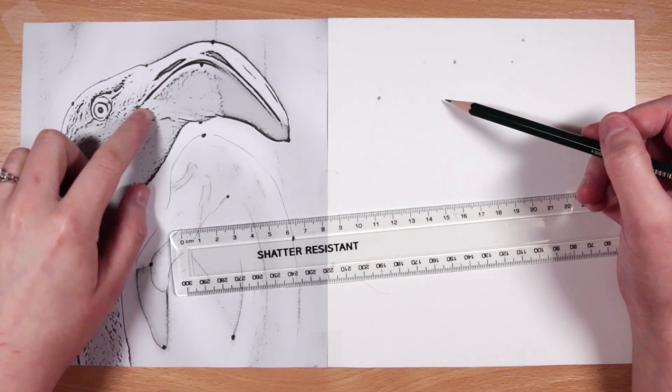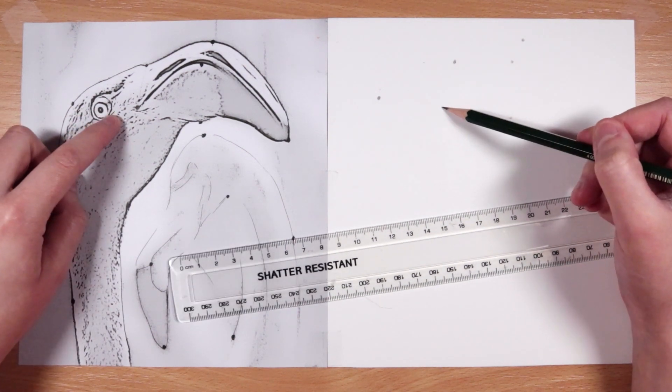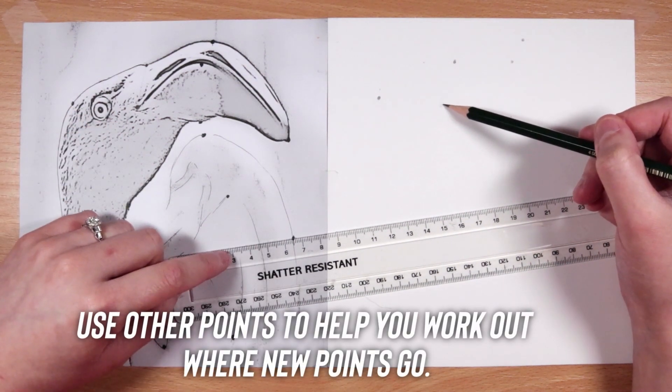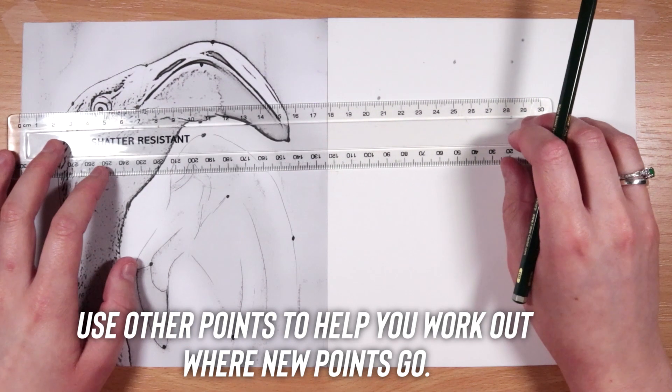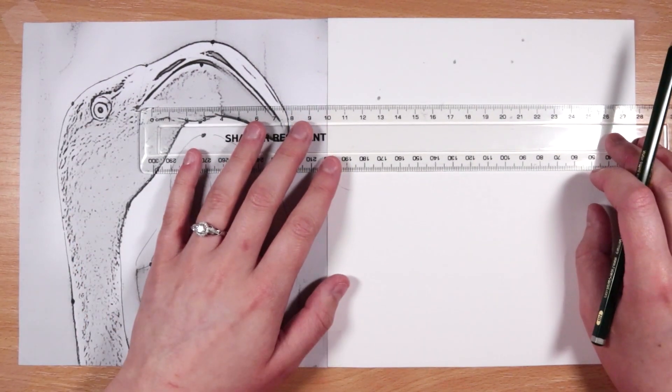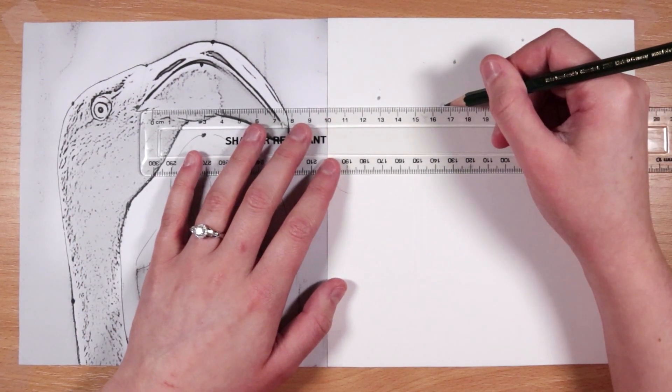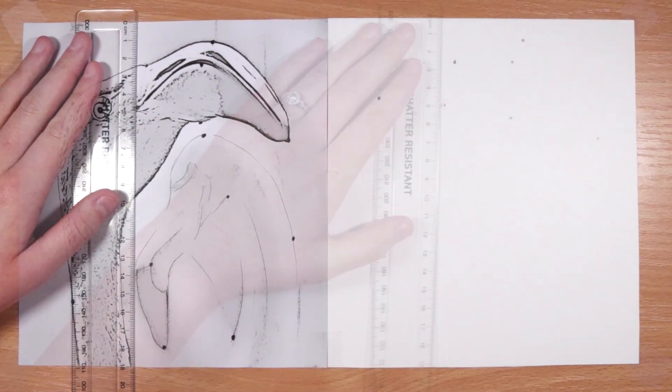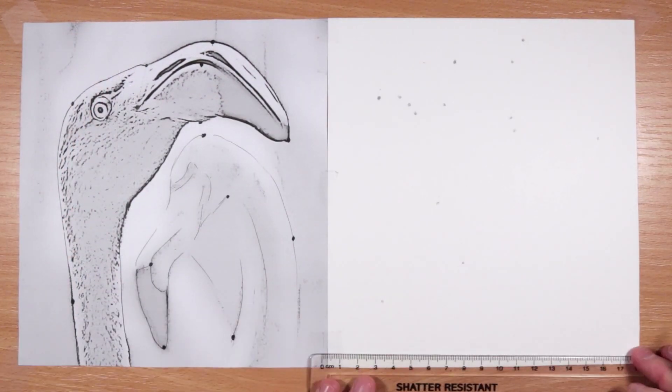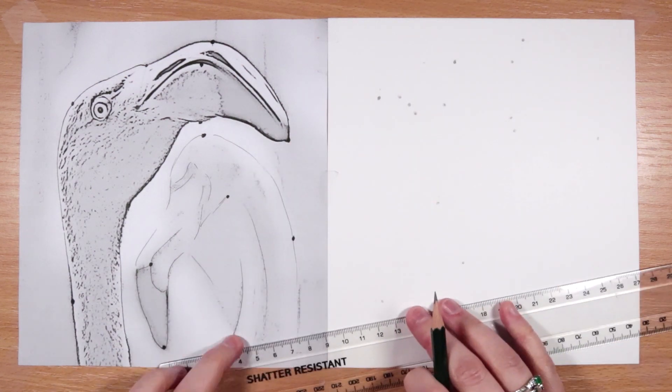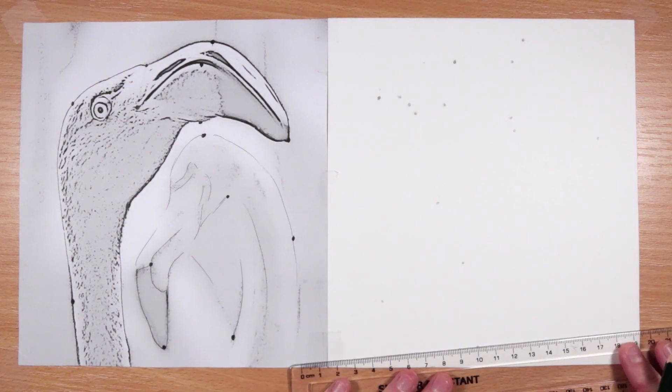For this, I'm actually using quite a lot of reference points. Another tip is to use other points to help you work out where your new points should go. For example, with this new point that I'm plotting now, I use the reference point that I've already done above and to the side of it to help me better predict where that should go before I measured it out to see how accurate I was.